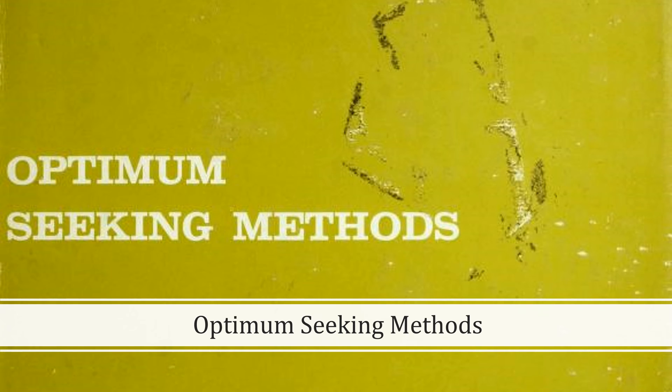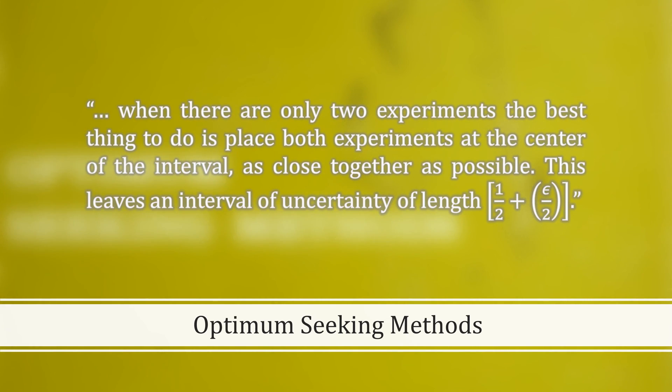Let's look at optimum-seeking methods by Wilde. In it, the author writes, When there are only two experiments, the best thing to do is place both experiments at the center of the interval, as close together as possible. This leaves an interval of uncertainty of length 1 half plus epsilon over 2.